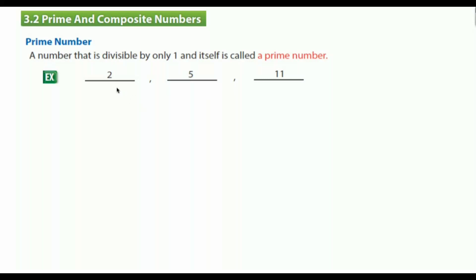How can you get 2? Just 1 and itself, right? Let's see: 1 times 2 equals 2. Could you find more factors for it? No. This is 1, this is itself. Because of that, 2 is a prime number.